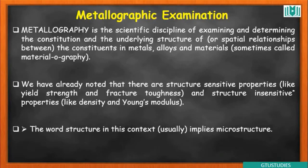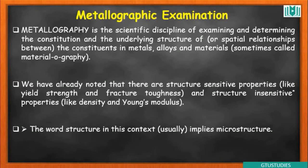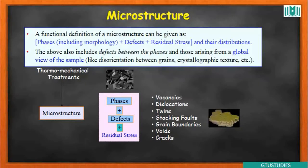Microstructure can be observed using a microscope. Microstructure is crystallographic in nature. If there is a defect, we can remove the defect. This is metallography — microstructure is a phase present in the material.